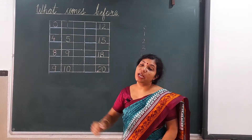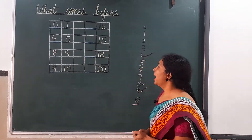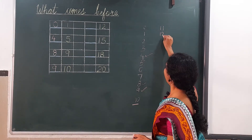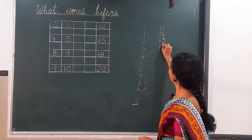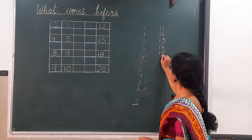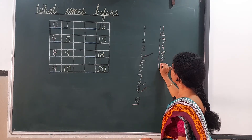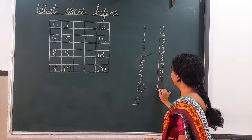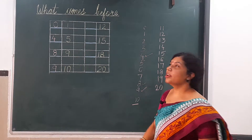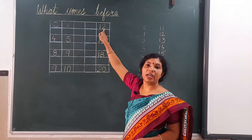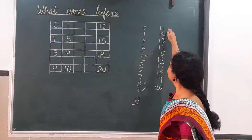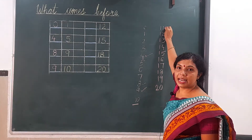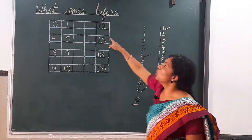It is 12. Now which number comes before 12? We will see the number line again: 11, 12, 13, 14, 15, 16, 17, 18, 19, and 20. Now we have to see which number comes before 12. Here we can see 12 is written and 11 is coming before 12.